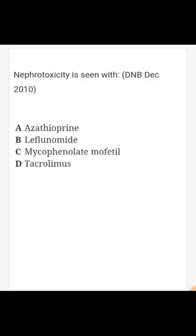The answer here is tacrolimus. Tacrolimus is a calcineurin inhibitor. It works somewhat similarly to cyclosporine by inhibiting IL-2 transcription, and it is more potent than cyclosporine. Both tacrolimus and cyclosporine are calcineurin inhibitors, with tacrolimus being more potent and thus requiring therapeutic monitoring. This class of drugs carries a high risk of renal injury.